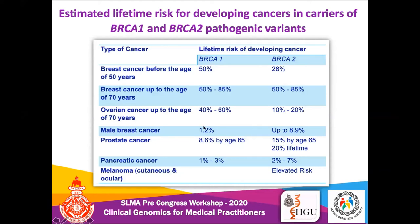Looking at pathogenic variants in BRCA1 and 2 — what is the estimated lifetime risk of developing cancers for carriers of these variants up to age 70? For both genes, if there are pathogenic variants, there is almost a 60 to 85 percent chance of developing a breast tumor. For ovarian cancer, the risk is more associated with BRCA1 — almost 40 to 60 percent increased risk. For male breast cancer, prostate, pancreatic cancers, and melanomas, BRCA2 gene variants are more implicated.